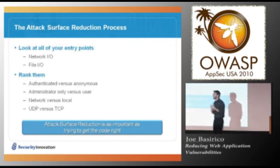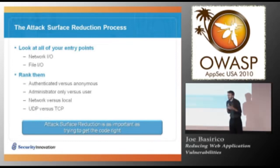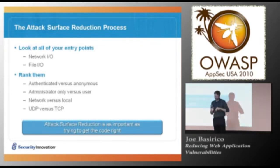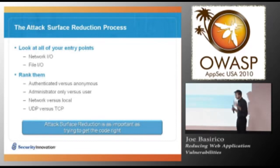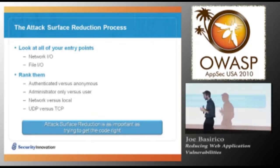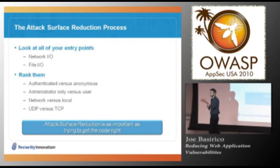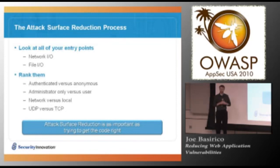How do we actually reduce our attack surface? How do we enumerate it? First, you want to list out all of your entry points — UI libraries, network I/O, pipes, file I/O, databases, all that kind of stuff — and all the features. Then we're going to rank them. Is this entry point one where you have to be authenticated to access it, or can you get to it anonymously?